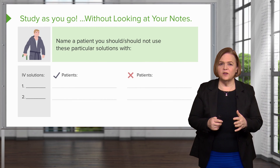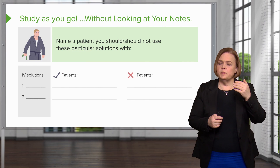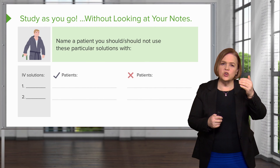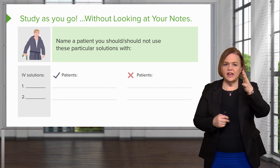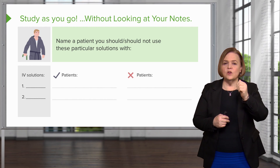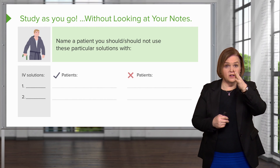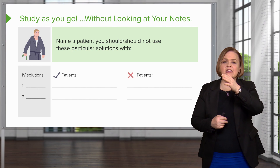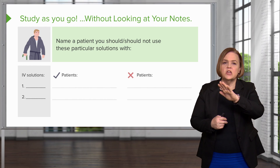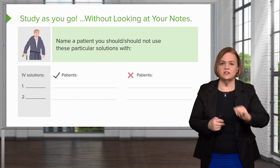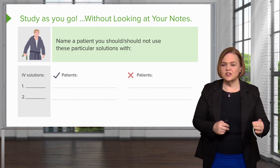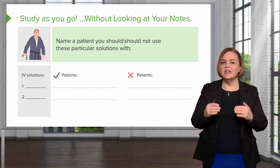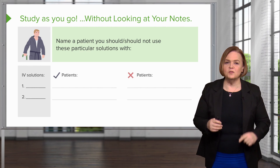Here's a good one — this will be a good test to think through what we just talked about. Put the name of the IV solution on the left, then think about what type of patients it would be good for — that's the checkbox. And think of the X — patients who should not receive that type of solution. Work your way back through the presentation to make sure you have each one of those patterns clear in your mind.